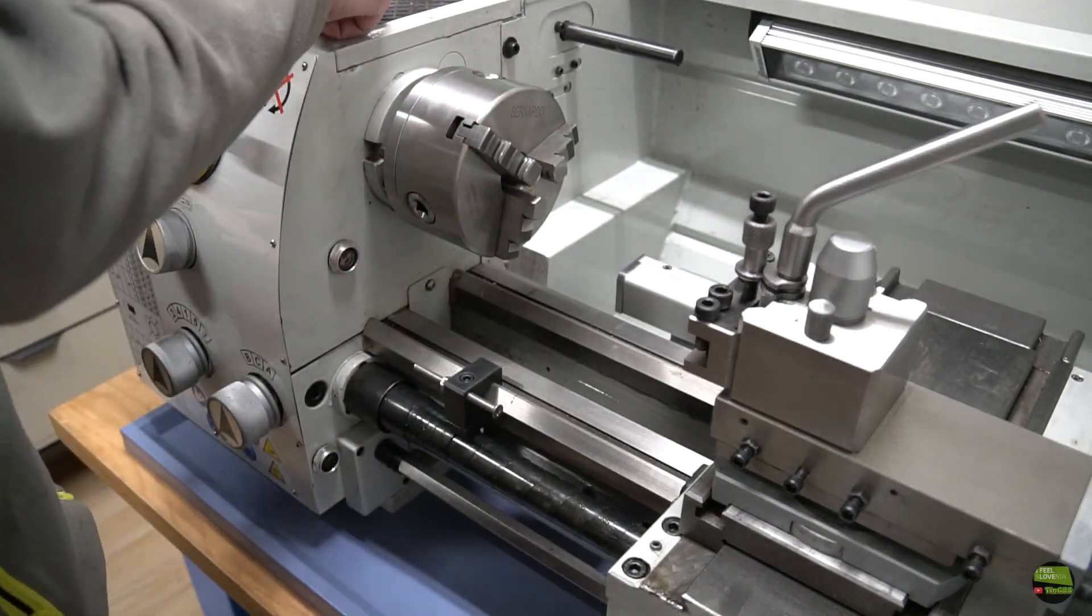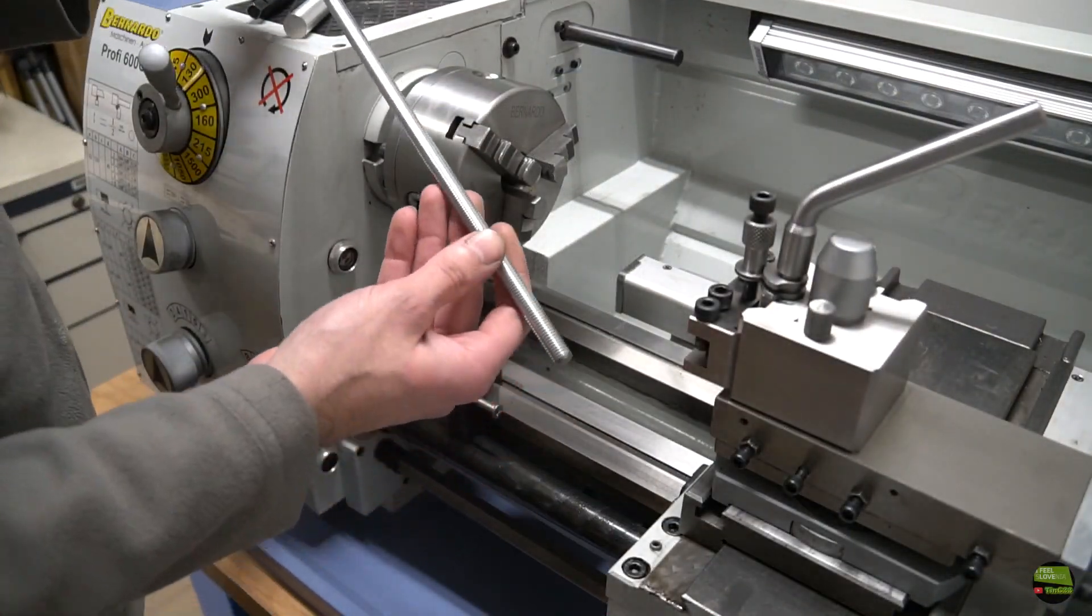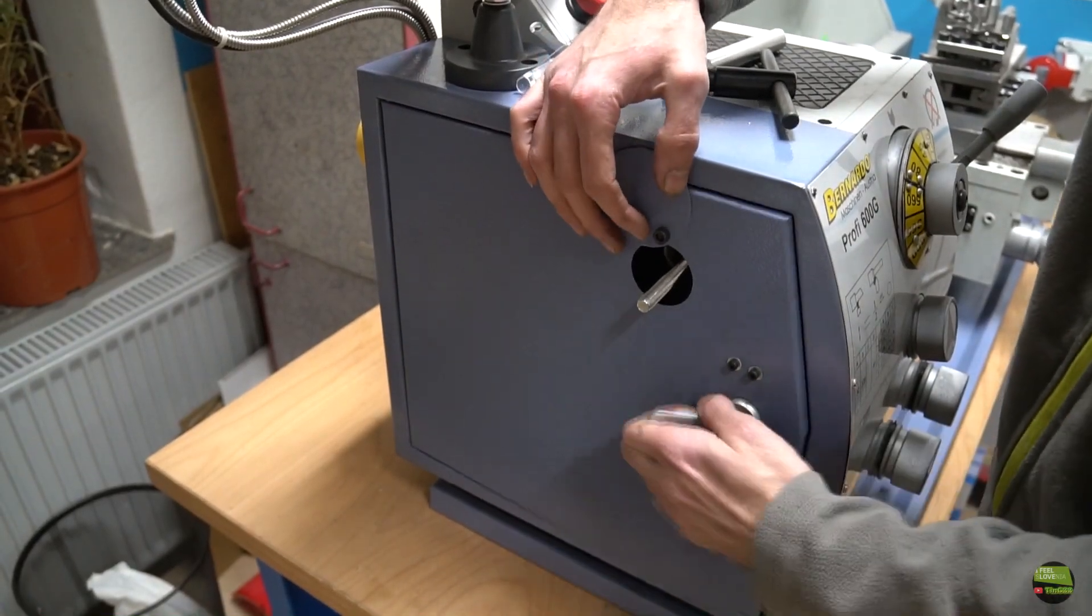But my lathe is a bit small to make that kind of blocker, since it only has a 26mm spindle bore, so I'll just try to fix this 10mm threaded rod into the spindle somehow.